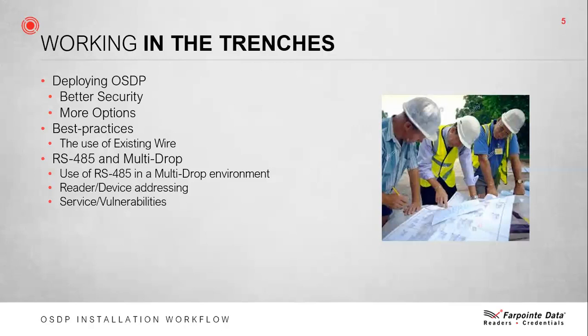Regarding addressing: if you utilize multi-drop deployment, readers must be assigned addresses so they can be identified within the loop. This address is assigned via OSDP tools from the controller. It's also important to understand that not all controller manufacturers will provide the same capabilities — some limit their multi-drop spec to eight devices, and others only support OSDP in point-to-point topology. Regarding service and vulnerabilities: if you experience a line break within a loop of devices, any device wired past the break would cease to operate. This means the difference between one door being down versus several doors being down — though you have to ask yourself how often you actually experience these types of line breaks.